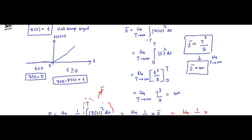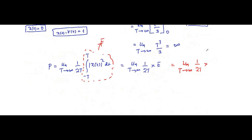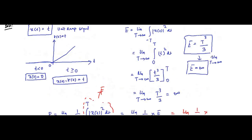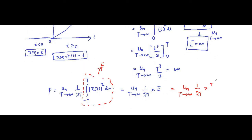That is why it is very important to write the expression of energy and power in terms of capital T for calculation purposes. Substituting T³/3 for E gives T²/6. Limit T tends to infinity of T²/6 equals infinity, because infinity squared divided by 6 is still infinity. So here energy is infinite and power is also infinite.